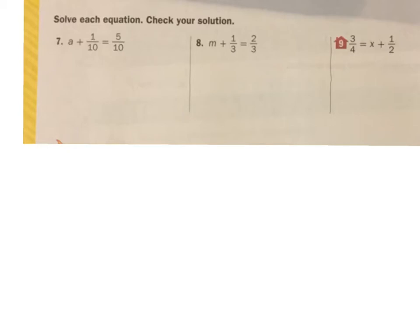So again, A plus 1 tenth equals 5 tenths. I want to get this A all alone. I want this A by itself. And the way I do that is I have to get rid of this 1 tenth. So minus 1 tenth on this side and minus 1 tenth on this side. A, that stays the same. 1 tenth minus 1 tenth is 0 equals, here's where I'm going to write it out like this. This helps me. 5 tenths minus 1 tenth. They have the same denominator, so that's cool. I don't have to do anything there. I just take it across. 5 minus 1 is 4. And I keep the denominator of 10. So 4 tenths.